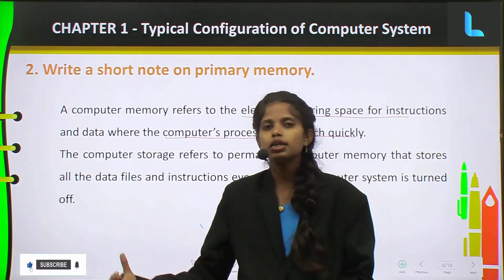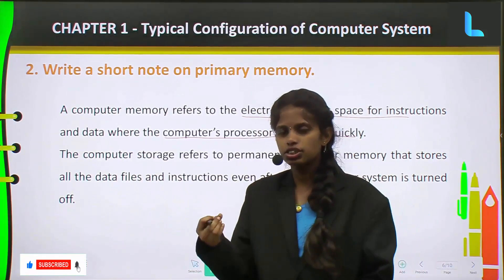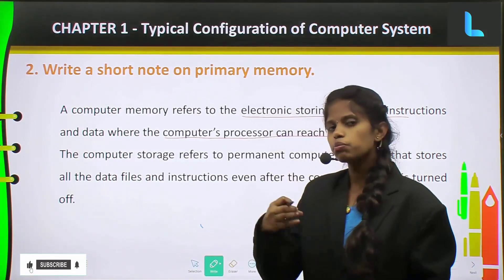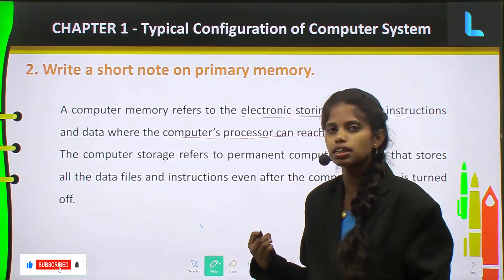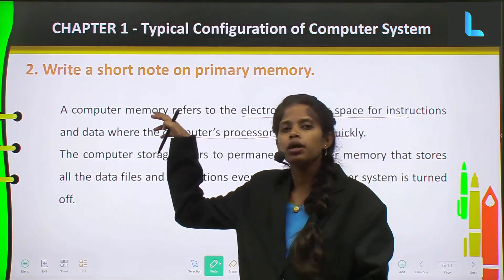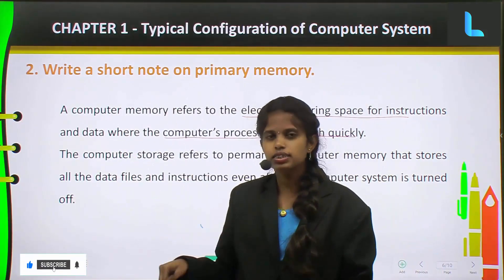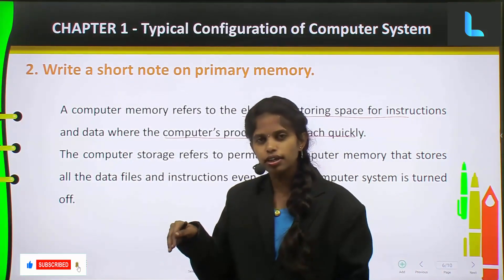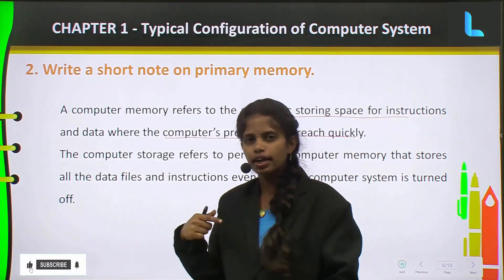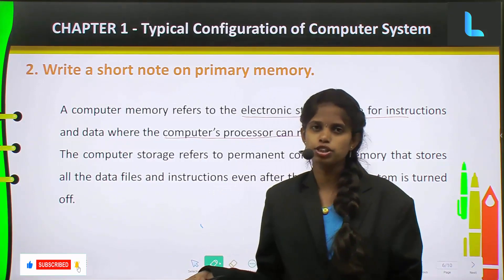quickly. The CPU must take the instructions for processing. From where is the processor taking the instructions? That is from the memory itself. All the instructions will be placed in the memory, from there the CPU will take and process that for getting the information.